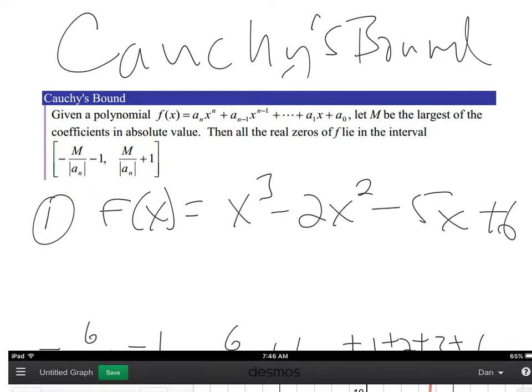It says that all the possible roots would be between these values. We'll calculate them for problem number one out of section 3.5 in the extended edition. If we apply Cauchy's bound to this, the M is the largest coefficient. I'm seeing the largest coefficient is 6. Some people might ask, well, 6 isn't really a coefficient, but actually it is because there's an x to the 0. It's 6 times x to the 0 versus 6 times x to the 1.